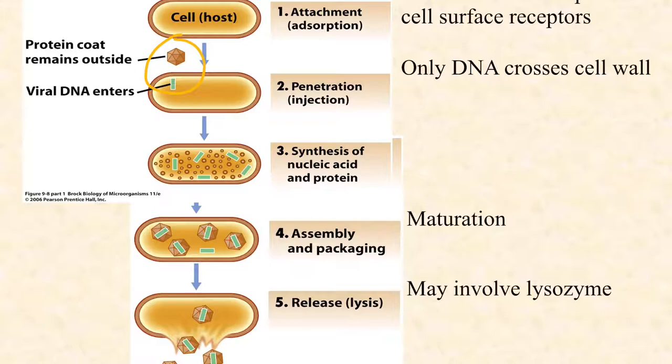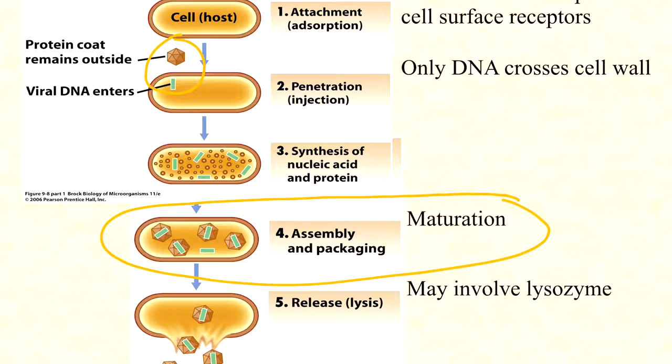Only the DNA crosses the entire cell envelope and enters the cell. Once inside, it shuts down most of the cell's life functions and directs the cell to make more nucleic acid — more double-stranded DNA genomes — and more proteins, including the complex capsid proteins and tail fibers, and enzymes like lysozyme. Once a critical concentration is reached, maturation takes place: assembly of the capsids and packaging of the DNA into those capsids.